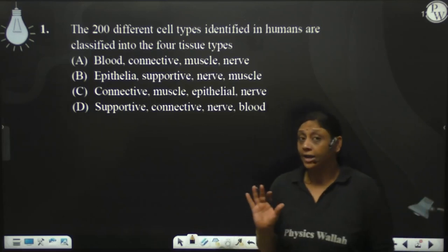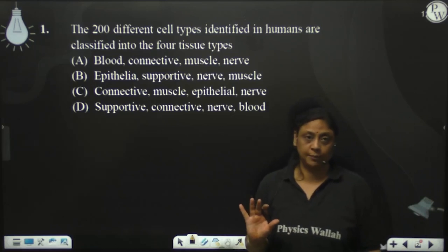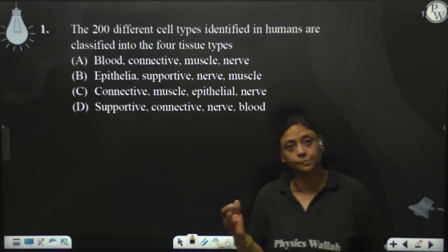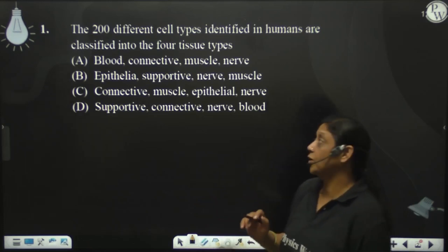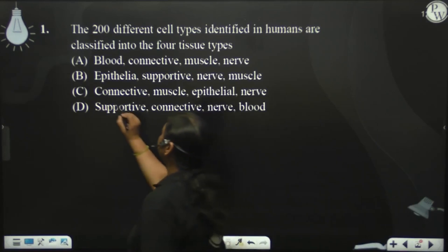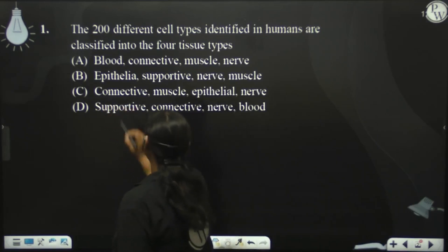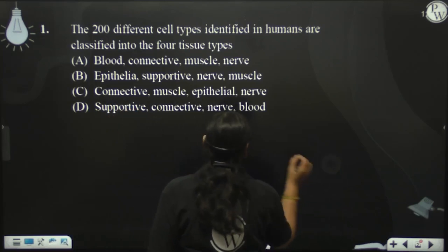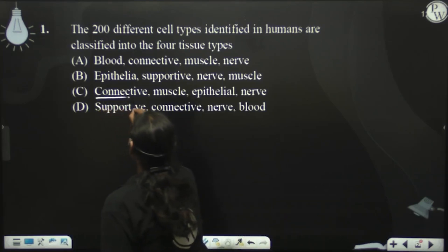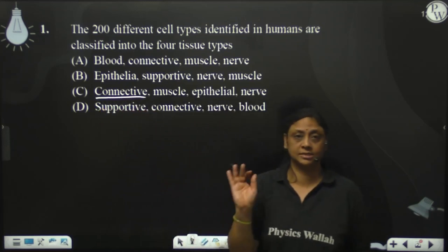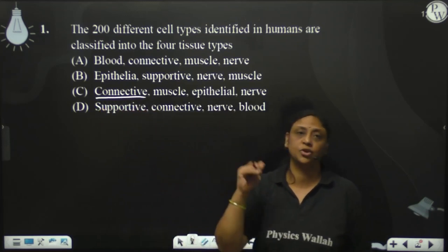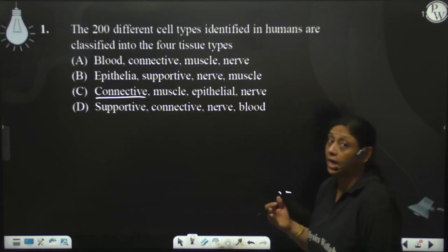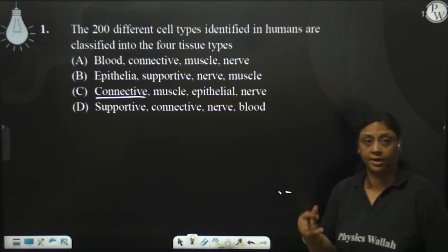Human ke andar actually 4 tarah ke tissues hote hain, aur vo basically different different functions perform karte hain. Sabse pehla jo important tissue hai vo hai connective tissue. Connective tissue ka function hota hai — it connects different organs. Ek organ ko doosre organ se connect karna. For example, tendons, ligaments, bones, cartilage, blood, lymph — many are there.